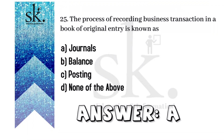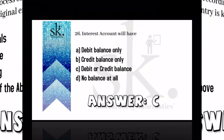The next question: the process of recording business transactions in a book of original entry is known as — if you remember the definition of journal, journal is a book of original entry. Therefore the answer will be A.